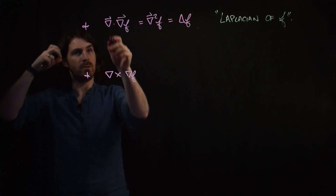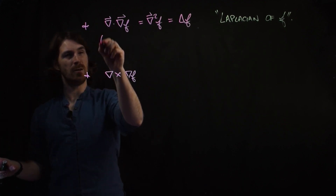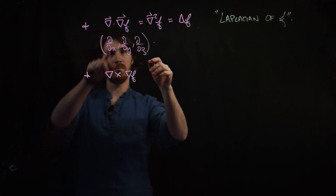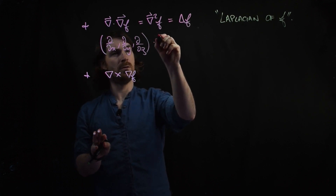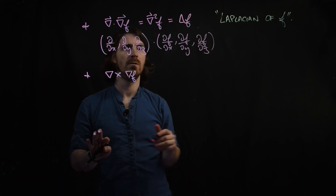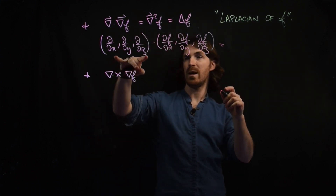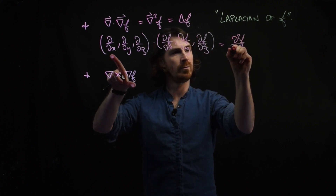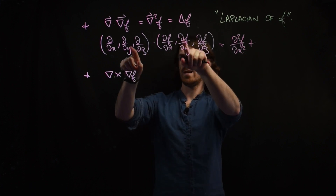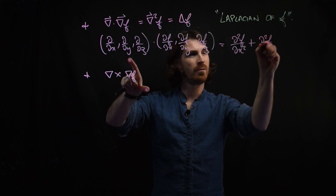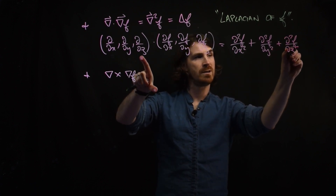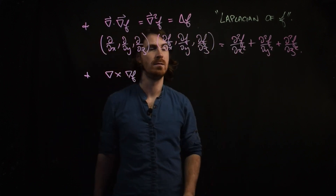What is the Laplacian of f? We take the dot product of the del operator (d/dx, d/dy, d/dz) with the gradient of f (df/dx, df/dy, df/dz). This equals the second derivative of f with respect to x — d²f/dx² — plus d²f/dy² plus d²f/dz². So the Laplacian is the sum of the three second partial derivatives of f.